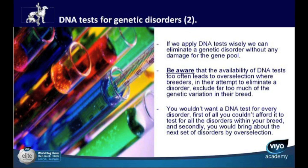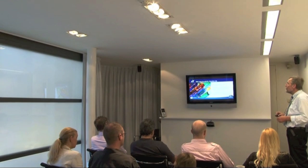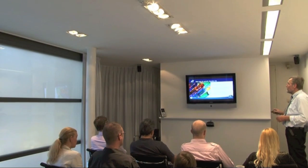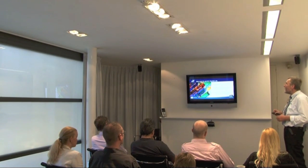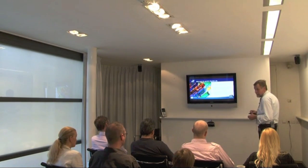So there are possibilities to have an absolutely high-quality selection program. If, on the other hand, you say: now we are going to solve the problem in the next generation — we don't have whatever defect anymore — then you can be sure you ruin your gene pool in a dramatic way. Be aware that the availability of a DNA test often leads to over-selection by breeders in their attempt to eliminate the disorder, excluding far too much of the genetic variation.